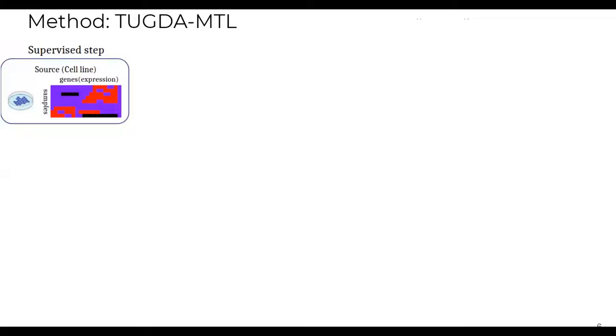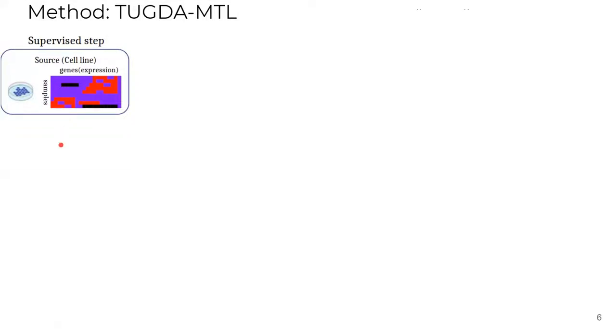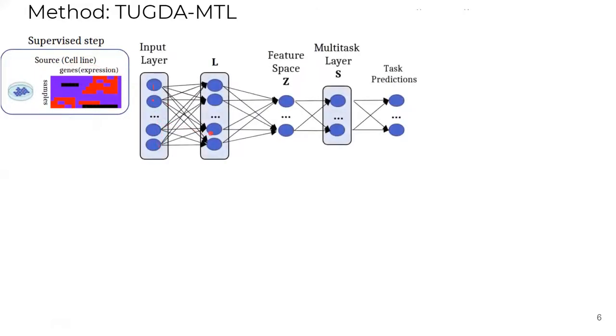So, here comes TUGDA for MTL. We train TUGDA using GDSC cell-line gene expression. TUGDA is a neural network consisting of an input layer and a layer L, which compresses the features to a shared feature space Z, used as an input to the multitask layer S, responsible for predicting all tasks at once. At this point, TUGDA is no different from a vanilla multitask learning with hard parameter sharing.